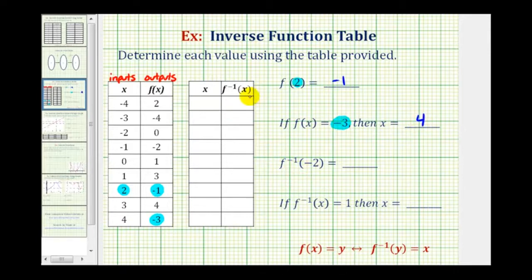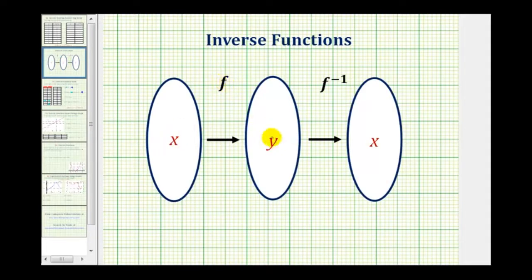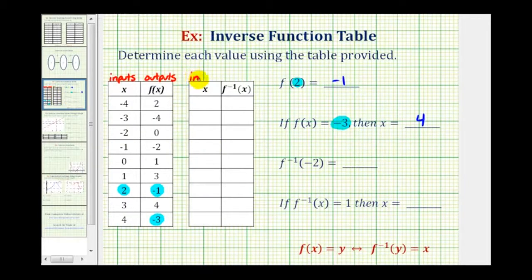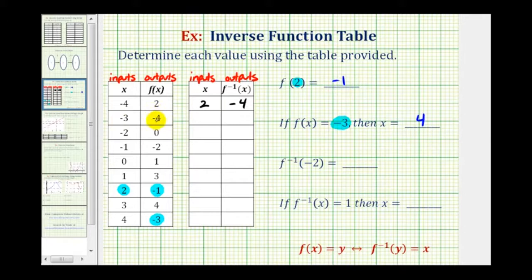These last two involve f inverse of x, so let's go ahead and complete the table of values for the inverse function. Remember, f of x and f inverse of x undo each other — if x is the input into f and y is the output, those y values become the input into the inverse function, returning the original x. So the outputs of f become the inputs of f inverse, and vice versa. For example, if f has input negative 4 and output 2, then f inverse has input 2 and output negative 4. Similarly, if f has input negative 3 and output negative 4, then f inverse has input negative 4 and output negative 3.